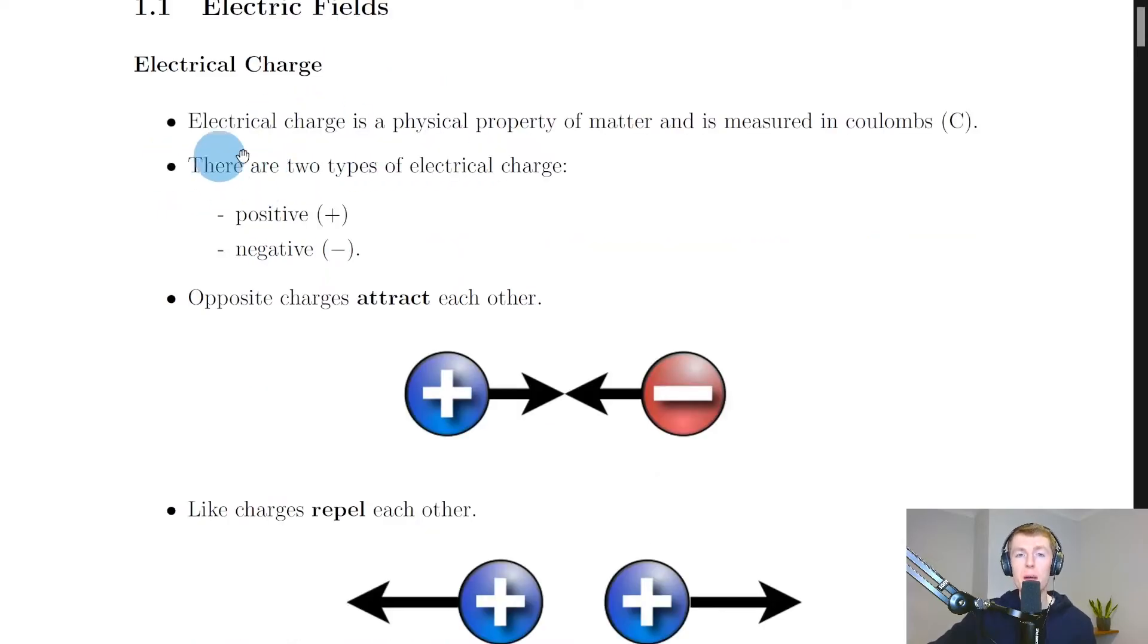So firstly, you should remember that electrical charge is a physical property of matter and is measured in Coulombs, which we give the symbol capital C. You should also know there are two types of electrical charge, positive and negative.